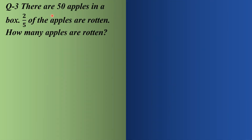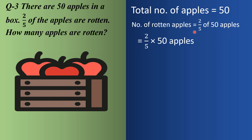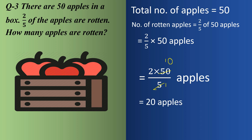Word problem: There are 50 apples in a box. 2/5 of the apples are rotten. How many apples are rotten? Total number of apples is 50. Number of rotten apples equals 2/5 of 50. Replacing 'of' with multiply: 2 multiplied by 50 by 5. Since 5 ones are 5 and 5 tens are 50, the answer is 20 apples are rotten.